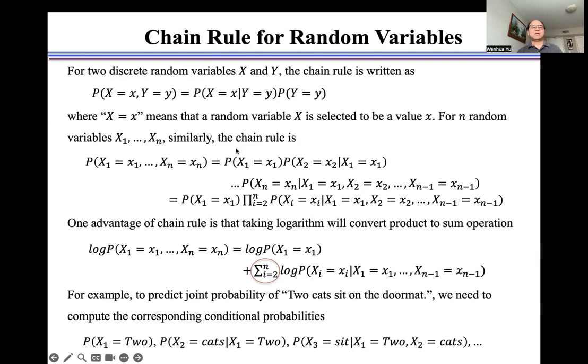For n random variables X1 to Xn, similarly, the chain rule is defined as the joint probability of X1 equals the product of conditional probabilities of each Xi.